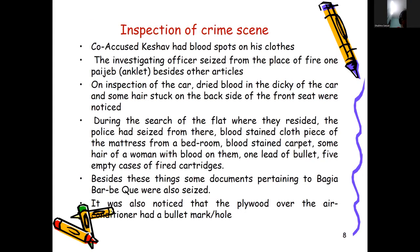On first inspection of the crime scene, the co-accused Keshav, the manager, had blood spots on his clothing. Investigating officers seized one Pajev anchor and other articles from the place of fire. On inspection of the car, dried blood and hair stuck on the back side of the front seat were noticed. From the flat, blood-stained cloth pieces of a mattress, blood-stained carpet, some hair of a woman with blood, and five empty bullet cases were collected from the crime scene.